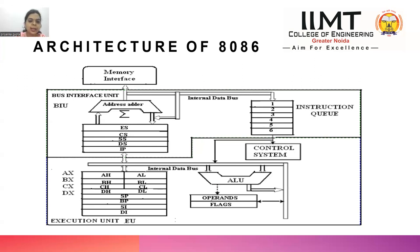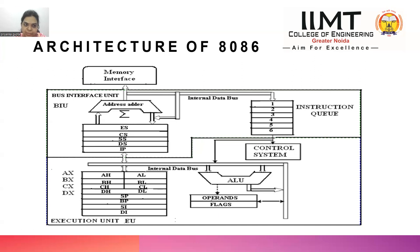The reason for having two separate units — BIU and EU — is to enable pipelining. If a single unit did both fetching and execution, there would be no concept of pipelining and processing speed would not improve. By having one unit continuously fetching instructions and another continuously executing them, both operations happen simultaneously, increasing the overall speed of processing.